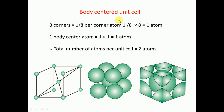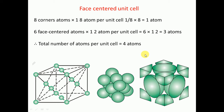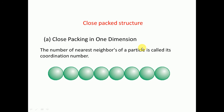Now we go to the body-centered cubic. We have one atom in the body center, making a total of two atoms. Then for the face-centered cubic, we have atoms at the corners and atoms at the face centers. Each face atom contributes one-half to the unit cell. So six faces multiplied by one-half gives three, and corner contribution is one, making a total of four atoms.